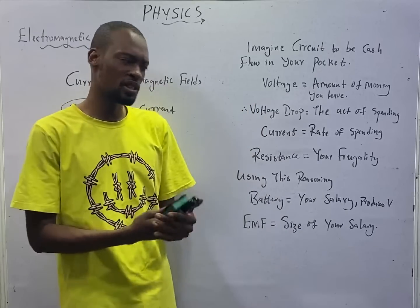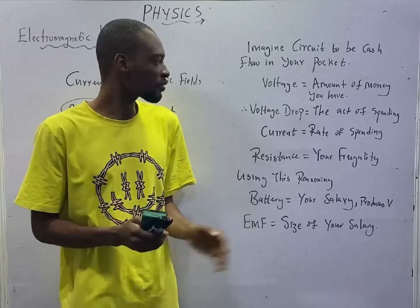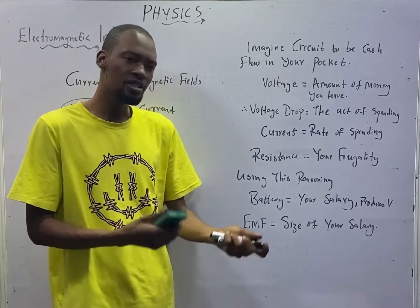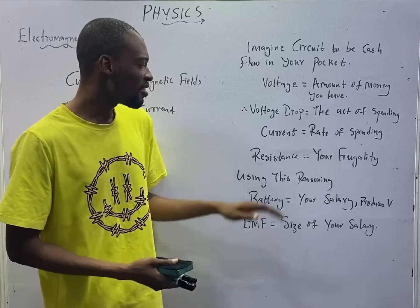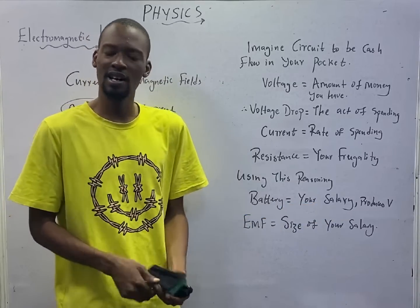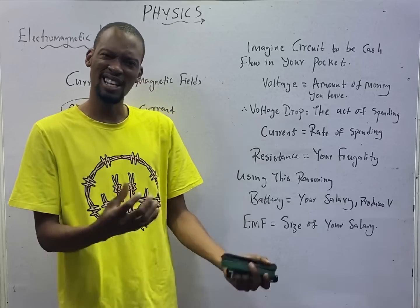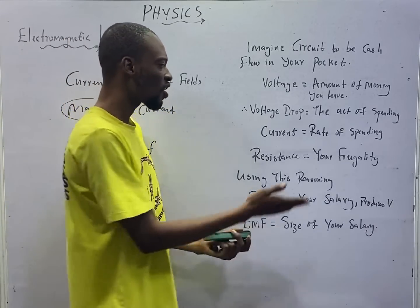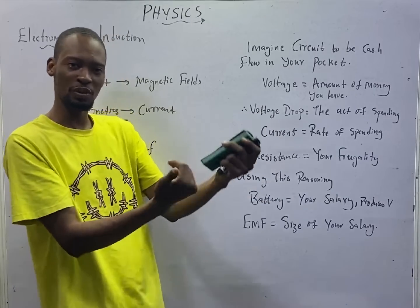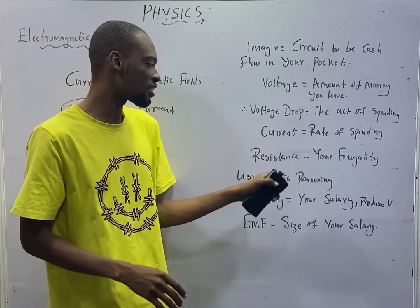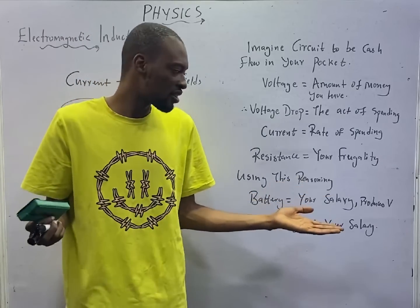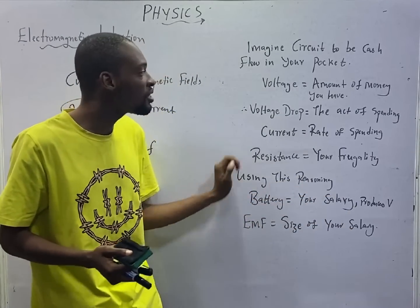So: the circuit is the total amount in your pocket; voltage is the amount of money you have; voltage drop is the act of spending; and current is the rate at which you are spending. Resistance is your frugality or reluctance. Anytime you want to spend and something says 'don't spend' — that is resistance, which is opposition to current. Battery can be your salary, because it is what produces the amount of money that you have.